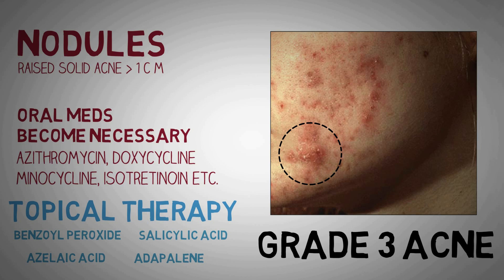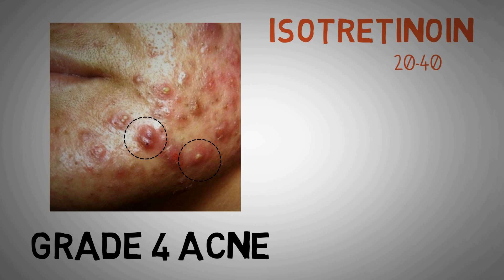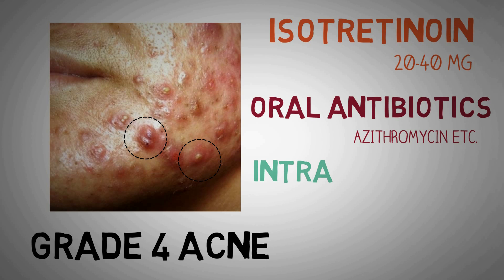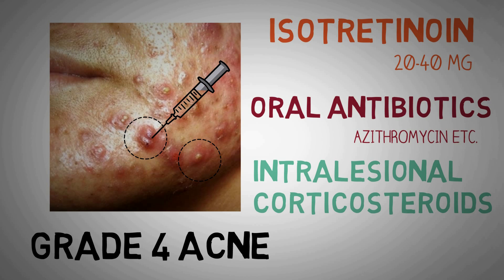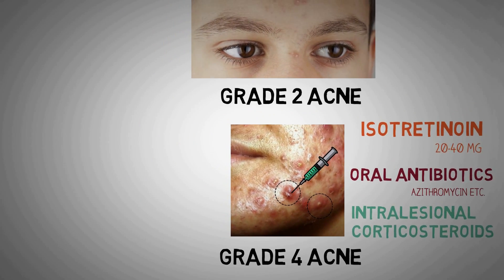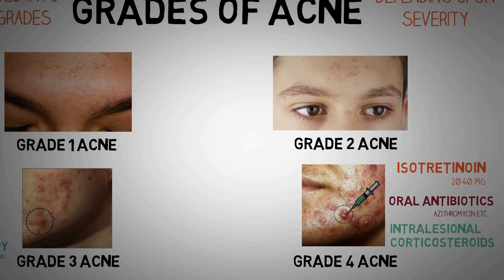If you have grade 4 acne, you need to consider taking oral isotretinoin. This is the main drug for this type of acne, usually started at 10 to 20 milligrams per day and gradually increased up to 40 milligrams. In addition to isotretinoin, you should also take oral antibiotics like tetracyclines or macrolides like azithromycin. In grade 4 acne, intralesional corticosteroids are also used — a very small syringe is used to inject steroids like triamcinolone directly into the acne cyst. Other options include oral dapsone, oral contraceptives for females, and comedone extraction.